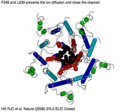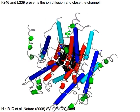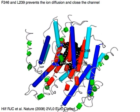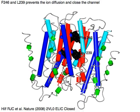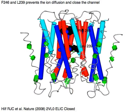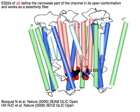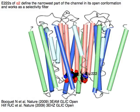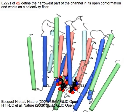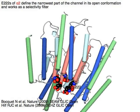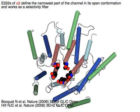Phenylalanine-246 and leucine-239 prevent ion diffusion and close the channel. E-222s of alpha-2, shown in pink, define the narrowest part of the channel and work as a selectivity filter.